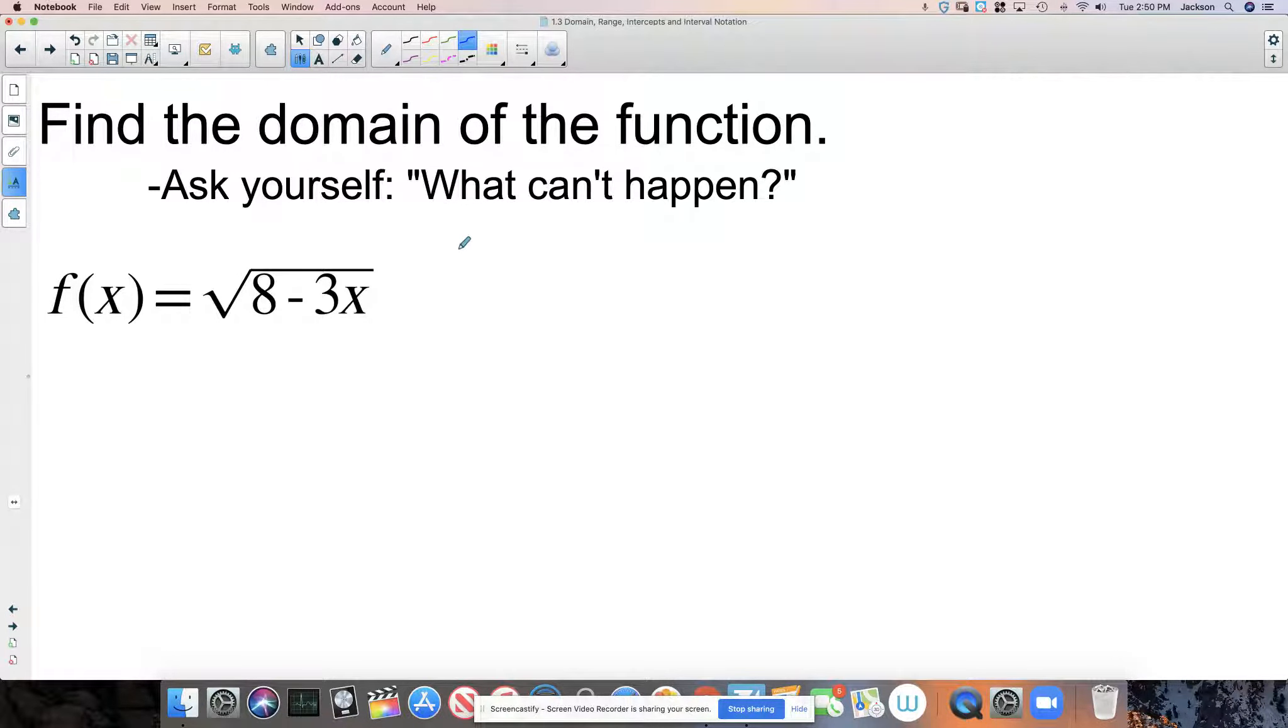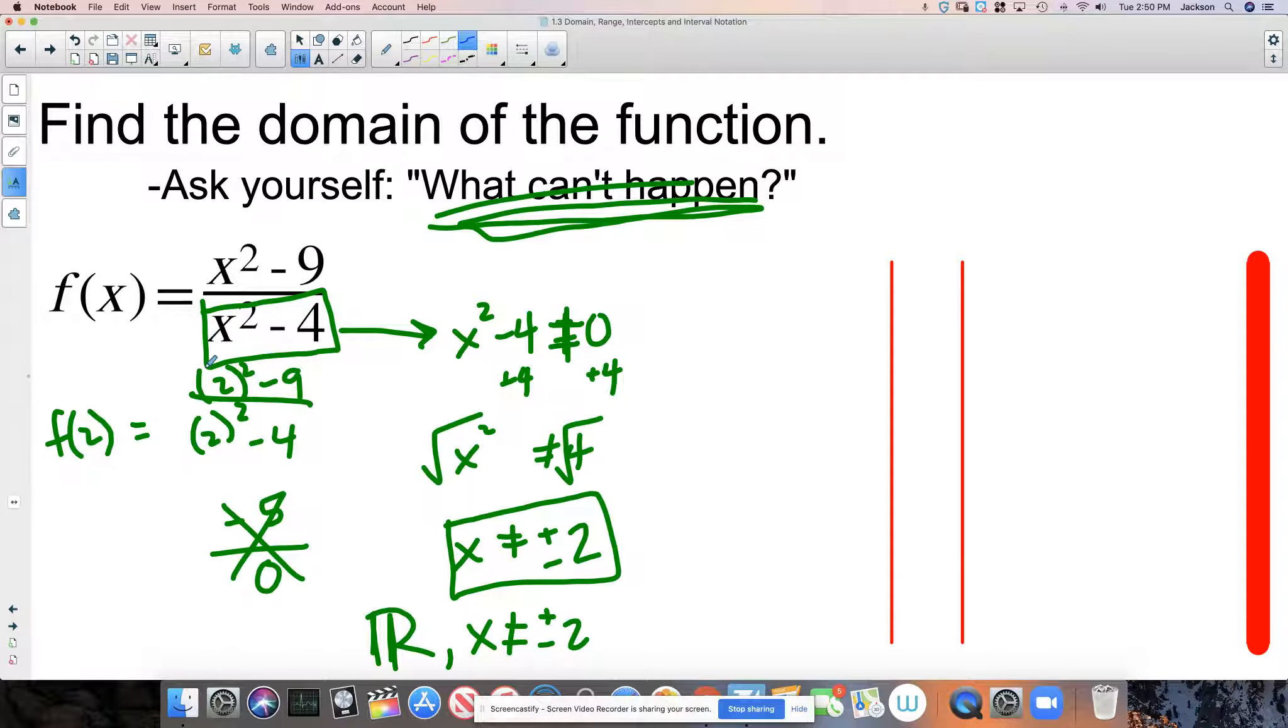So the previous video, we did an example that looked like this, where we said the denominator of a fraction cannot be zero. So we took this off to the side, and we said, I'm not allowed to let this be zero. The numerator can be anything—positive, negative, zero, whatever, doesn't matter. But the real value of a function is determined by its denominator. So we have to set this not equal to zero and solve.